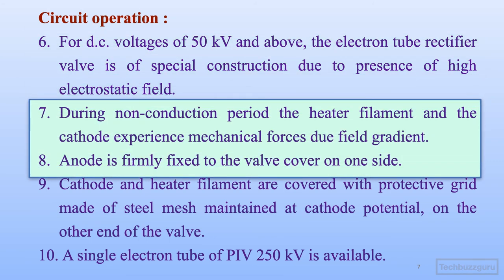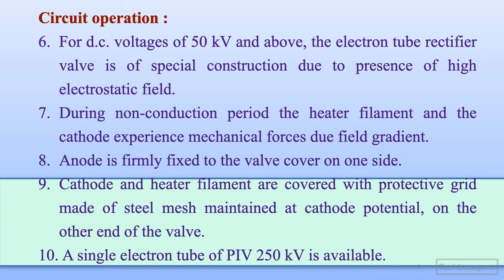During the non-conduction period, the heater filament and cathode experience mechanical forces due to the field gradient. The anode is firmly fixed to the wall cover on one side. The cathode and heater filaments are covered with a protective grid made of steel mesh maintained at cathode potential on the other end of the valve. A single electron tube with a peak inverse voltage of 250 kV is available for use in such applications.